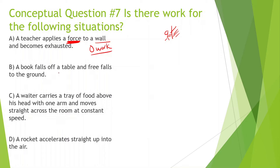Next: a book falls off the table and free falls to the ground. The book is falling down. There is actually going to be work here. The force of gravity is going to be pulling it down and it's also going to be moving down, so we can see gravity is doing work — force of gravity doing work.